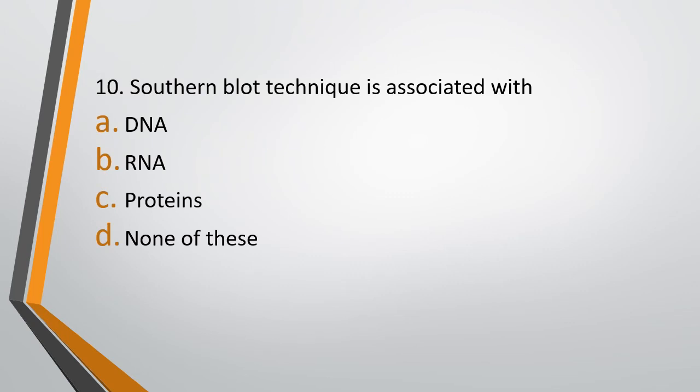Question 10. Southern blot technique is associated with: Option A, DNA; Option B, RNA; Option C, Proteins; Option D, None of these. The correct answer is Option A — Southern blot technique is associated with DNA. Northern blot technique is associated with RNA. Western blot technique is associated with proteins. So remember: Southern for DNA, Northern for RNA, and Western for proteins.